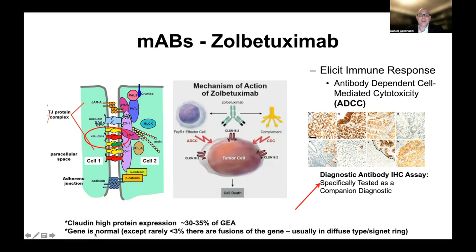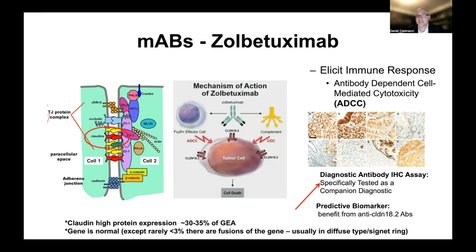It should be noted that the claudin 18.2 gene is usually normal — it is the protein that's overexpressed, so we need to test at the protein level. However, there is a small subset — less than 3% — estimated to have gene fusion of claudin 18.2, which usually tracks with diffuse-type signet ring tumors, and this can be identified by gene sequencing. But to be eligible for therapy, you need high protein expression as determined by the specific diagnostic IHC assay, confirmed as a predictive biomarker of benefit from the zolbetuximab anti-claudin 18.2 antibody.